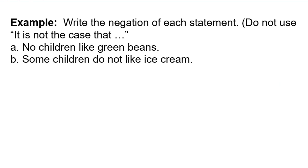Let's write the negation of each statement without using the cheat of 'it is not the case that.' For 'no children like green beans' — 'no' is a universal quantifier. This statement is false if there's even one child who does like green beans. So we negate it using an existential quantifier: 'There is at least one child that likes green beans,' or 'some children like green beans.'